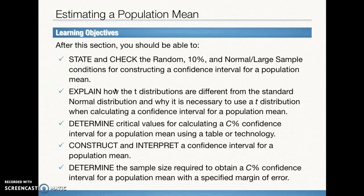Our objectives for this section are very similar to the section objectives for Section 2. State and check the conditions for inference, this time for a population mean confidence interval. Explain how the t-distribution is different from the standard normal distribution and why we use a t-distribution. Determine the critical values for a c% confidence interval for a population mean using either a table or technology. Construct and interpret a confidence interval for a population mean. And determine the sample size required to obtain a c% confidence interval for population mean for a specific margin of error. This is similar to what we did in Section 2 when we calculated the minimum mean necessary to get the results that we want.